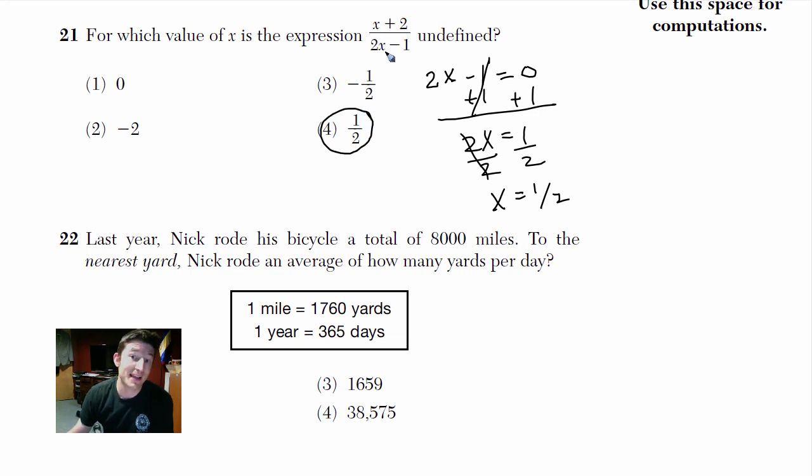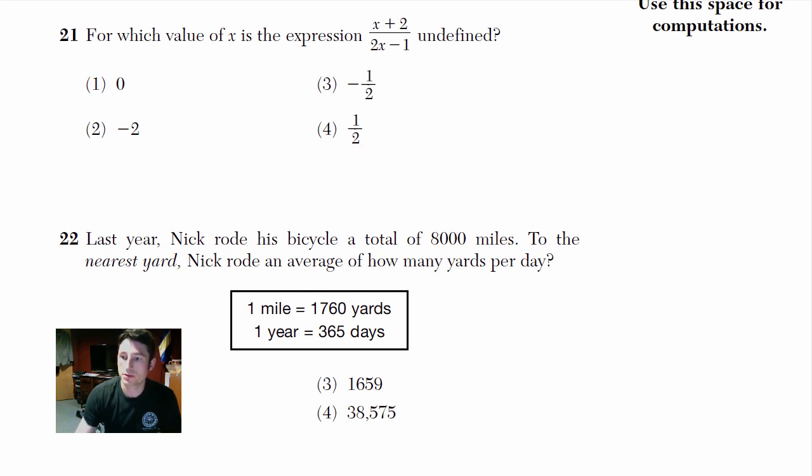So that's choice 4. And if you plug that in, 2 times a half is 1, 1 minus 1 is zero. So we don't want the denominator equaling zero. That's going to make it choice number 4. Alright, let's move down to the next one. We got number 22.